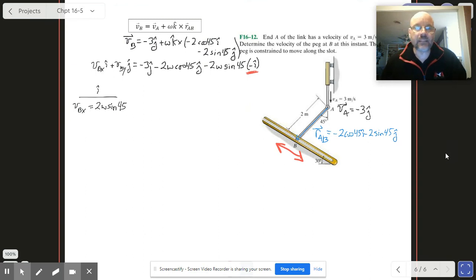I'm just gonna double check that. And we'll do the vertical information now. So I've got VBY, that's gonna be minus 3 minus 2 omega cosine 45.